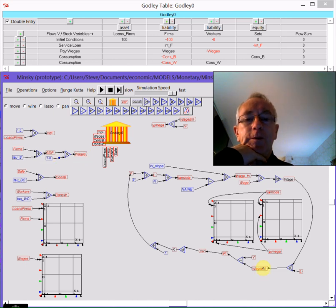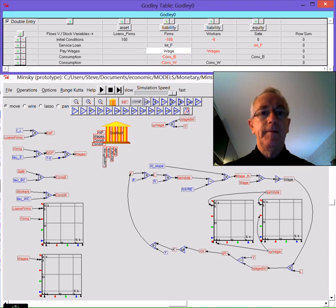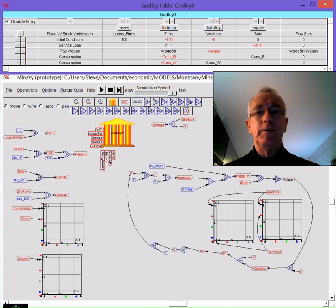But notice I've got the wage bill over here. Well, if I just go to the Godley table here and make this wage bill, and minus wage bill to put the cyclical consistency across the rows, I've now linked the two models.